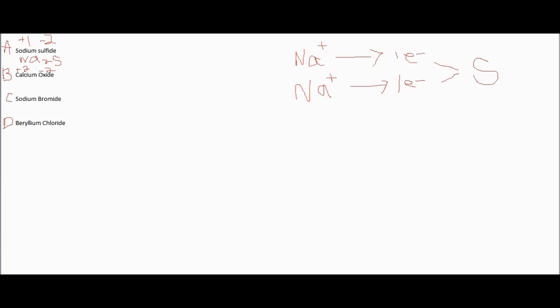So that's just CaO. Another way to think of this: calcium wants to give away 2, this one wants to gain 2. Perfect, just 1 and 1.